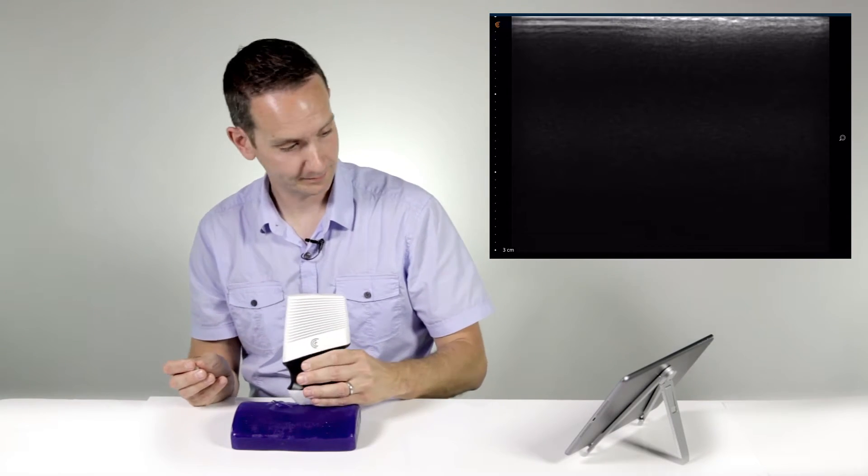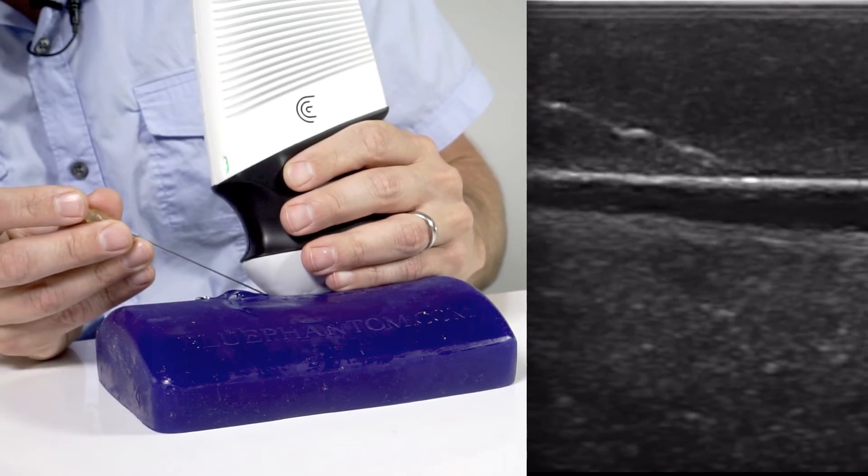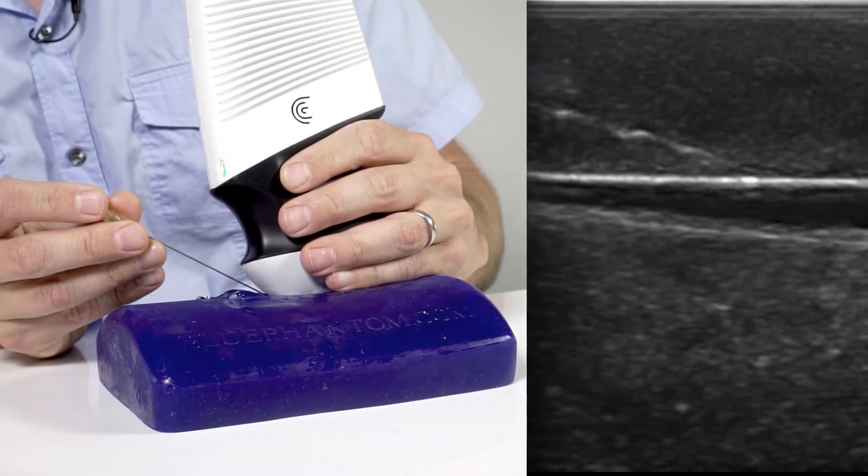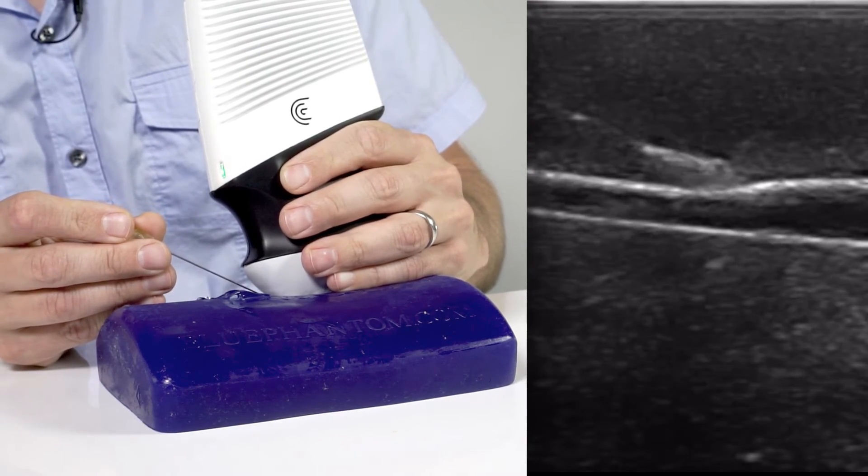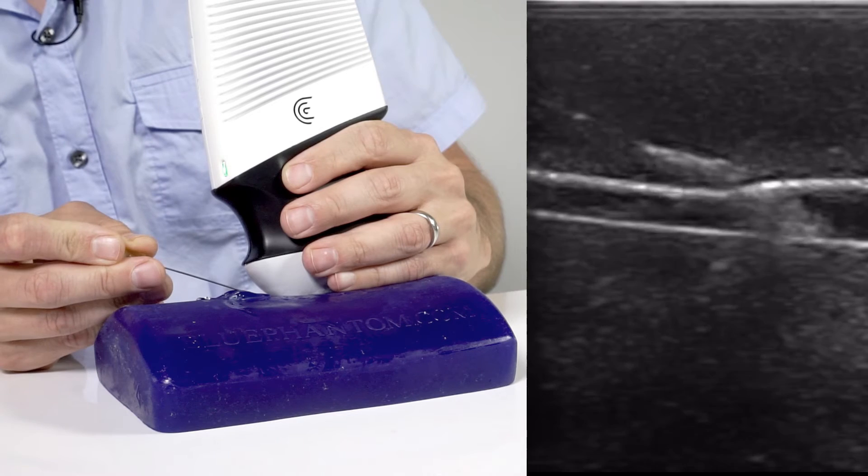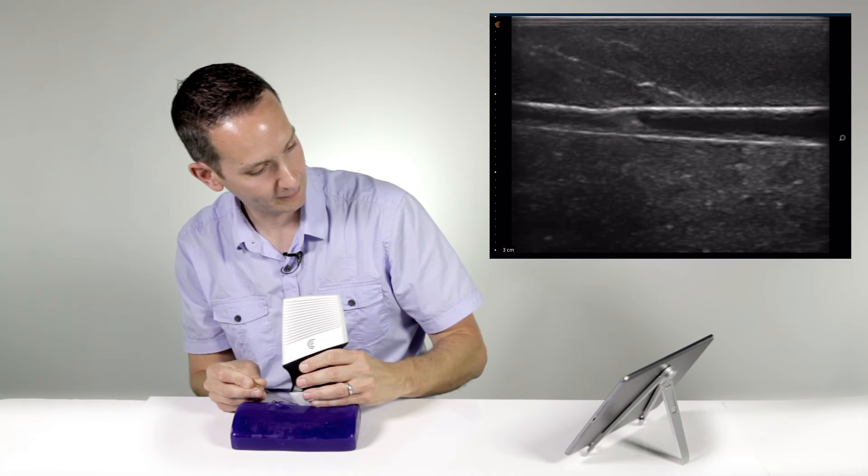For the long axis approach, line up the vessel on the screen, introduce the needle at about a 45 degree angle in the center of the probe and you should be able to identify the needle tip as it enters the vessel.